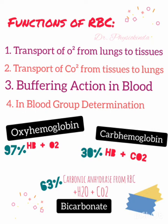RBCs also contain a large amount of carbonic anhydrase, an enzyme necessary for the formation of bicarbonate from water and carbon dioxide. This helps transport carbon dioxide in the form of bicarbonate from tissues to the lungs. About 63% of carbon dioxide is transported in this bicarbonate form, made possible by carbonic anhydrase present in RBCs.